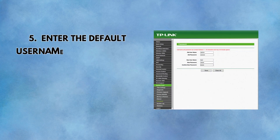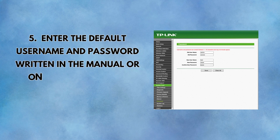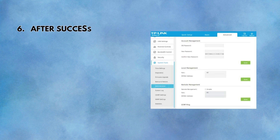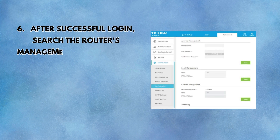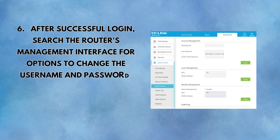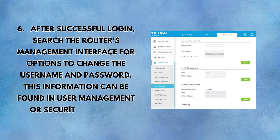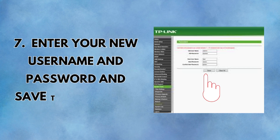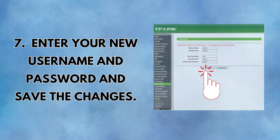Enter the default username and password written in the manual or on the router body — usually username: admin, password: admin. After successful login, search the router's management interface for options to change the username and password, found in user management or security settings. Enter your new username and password and save the changes.